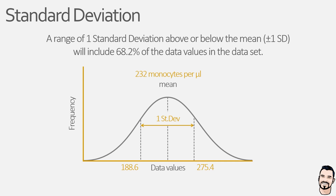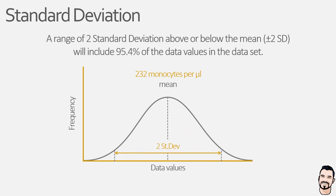And this is because it relates directly to the shape of the bell curve and the area underneath it. We can go further with our standard deviation: if we went above or below the mean value by two standard deviations, then it would include 95.4% of the data values in our data set. So for this example, 95.4% of data value observations should fall between 145.2 and 318.8 monocytes per microlitre.